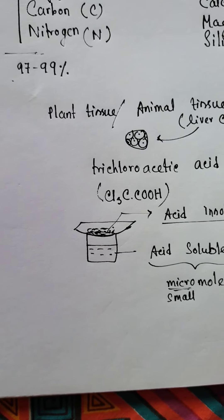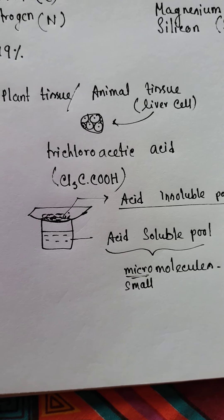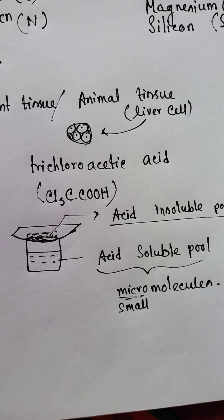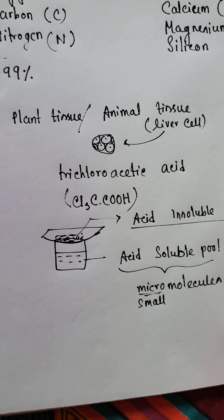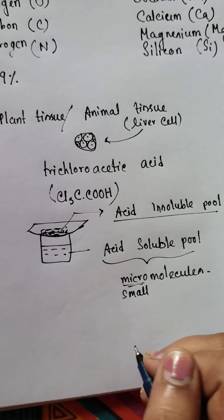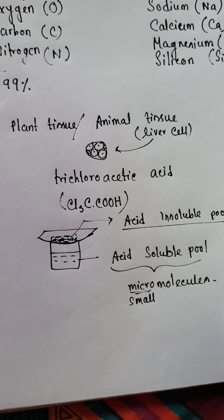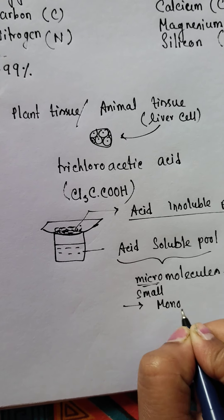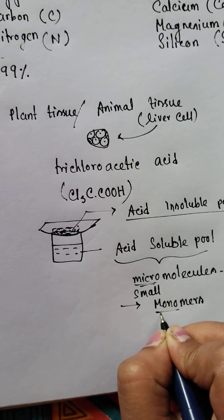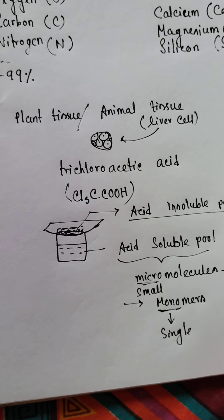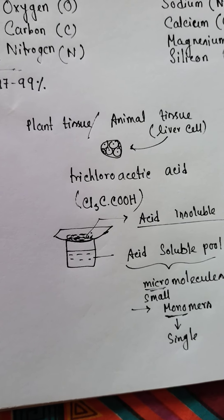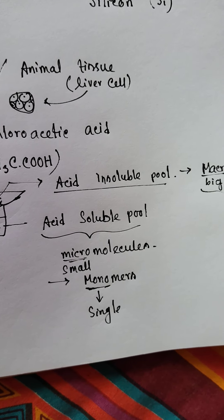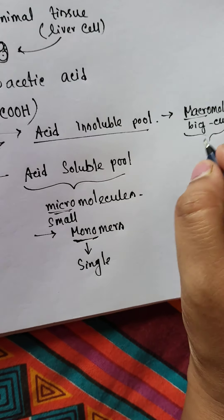So that is how we can separate biomolecules into bio-micromolecules and bio-macromolecules. Micromolecules are small (micro means small), and macromolecules are big (macro means big). The micromolecules have less molecular mass, and the macromolecules are insoluble in trichloroacetic acid with a molecular mass greater than 800 to 10,000 daltons.